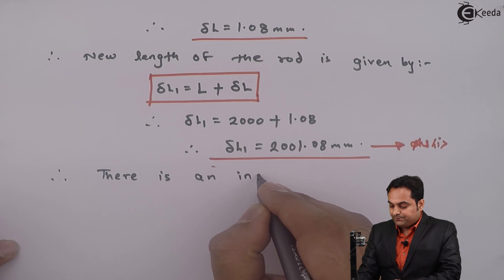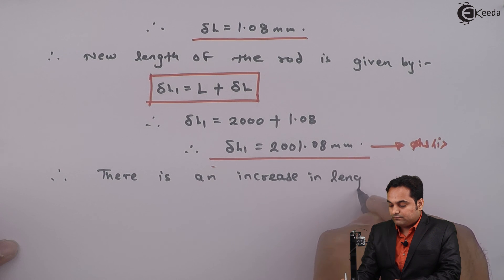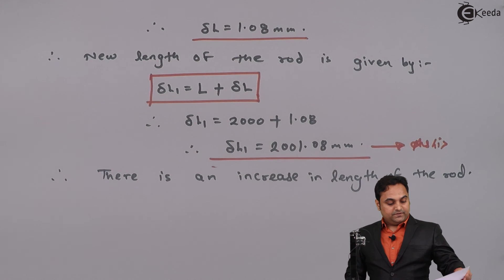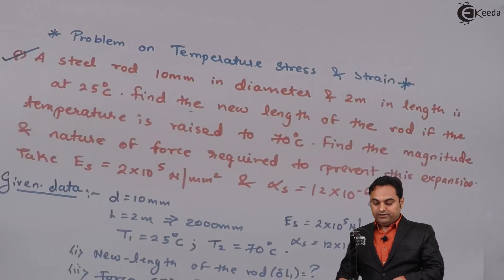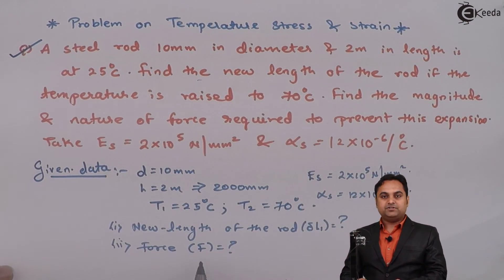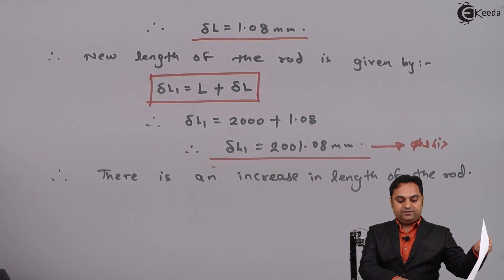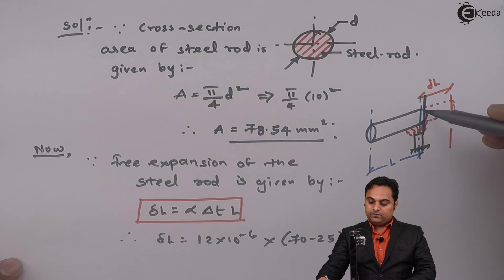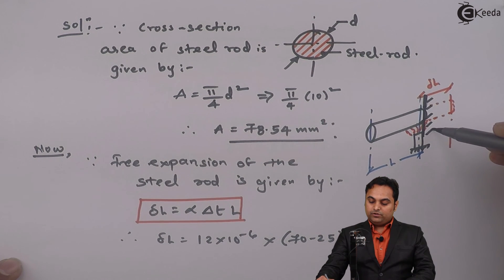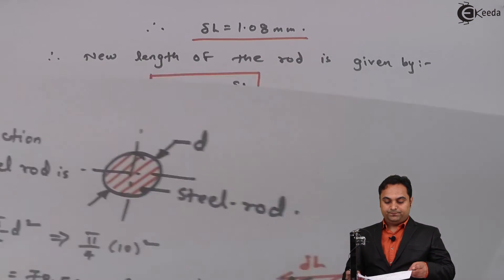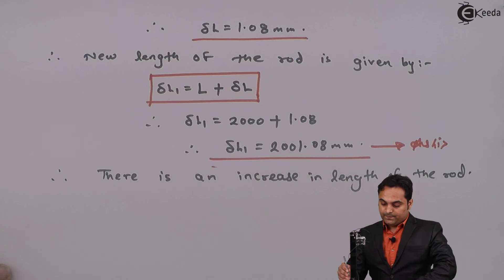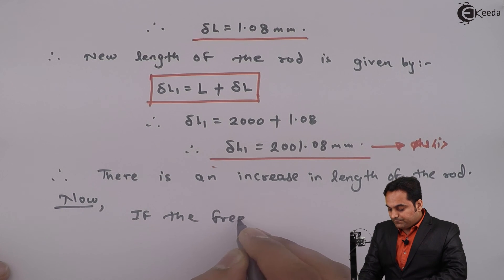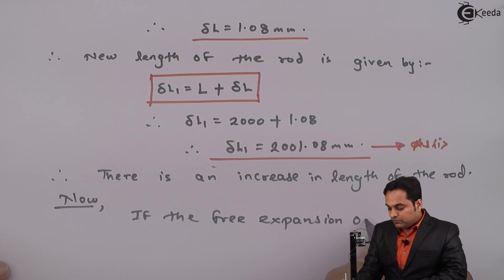As we can see, the original length was 2000 mm and now it is 2001.08 mm, so there is an increase in the length of the rod. The next part is to calculate the nature of force required to prevent this expansion. If we are heating the metal rod it will expand freely, but if we provide a wall it will avoid the free expansion.